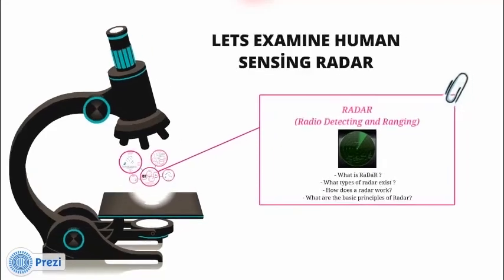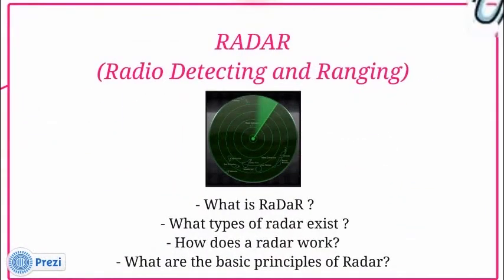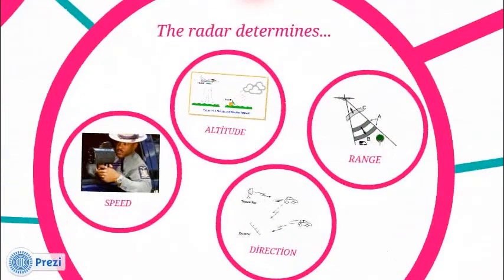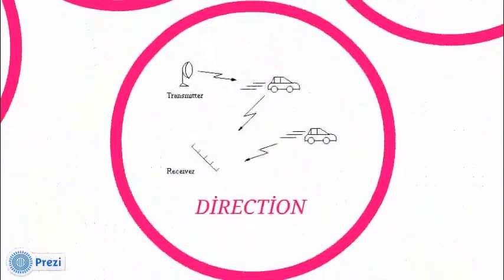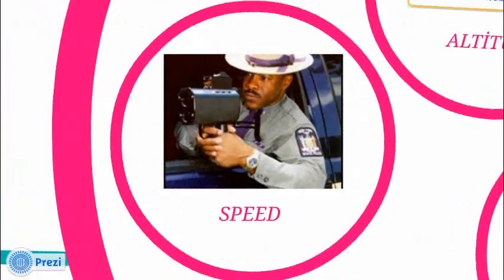Let's examine human sensing radar. The term radar stands for radio detection and ranging. We can understand that radar is a device that can detect range, altitude, direction or speed by manipulating radio waves.